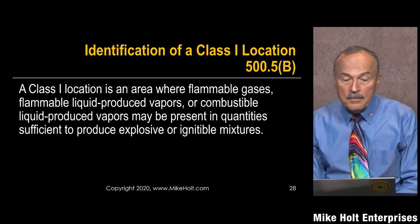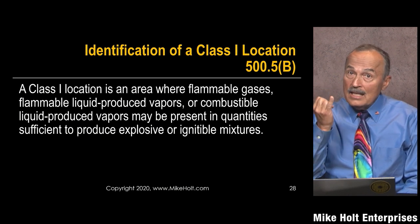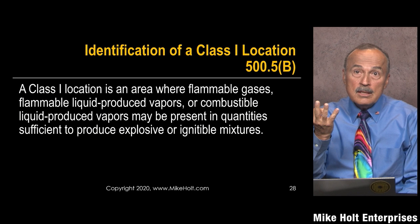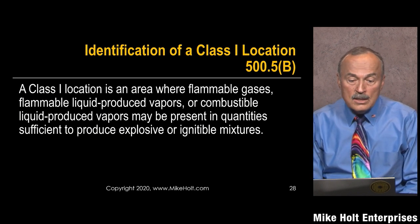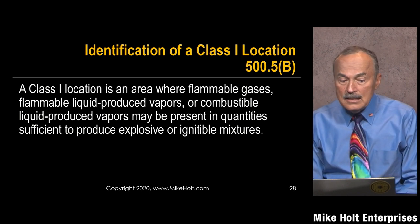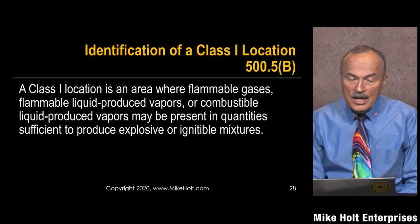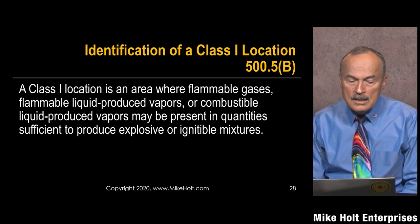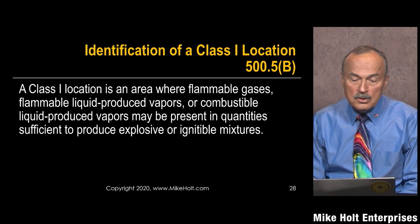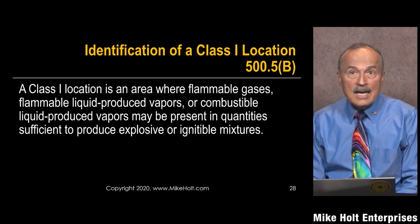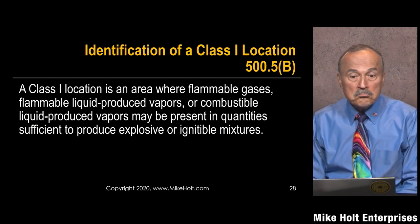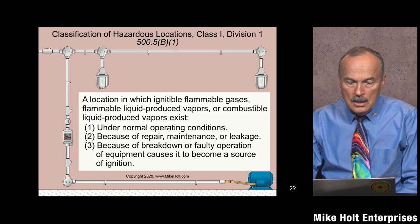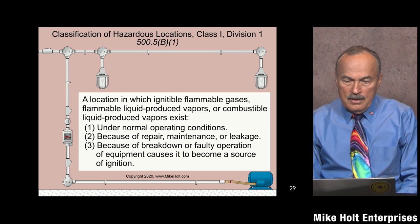In a Class 1 location — and we're going to cover Class 2 and Class 3 as well — Class 1 is a location where flammable gases, flammable liquid-produced vapors, or combustible liquid-produced vapors may be present in quantities sufficient to produce an explosive or ignitable mixture.